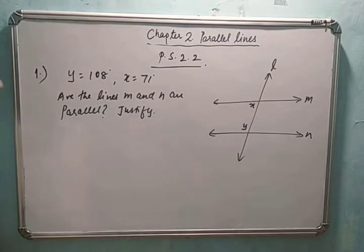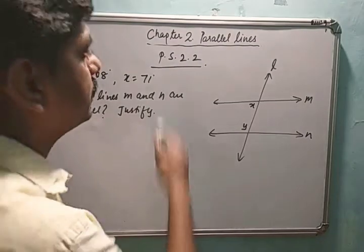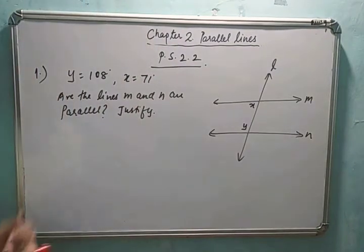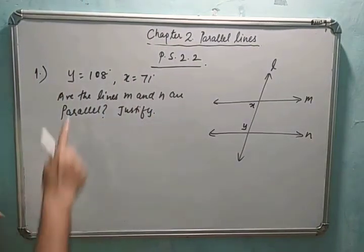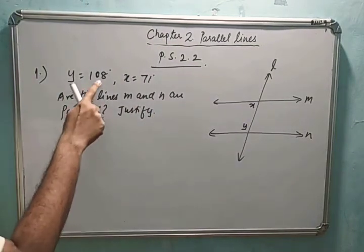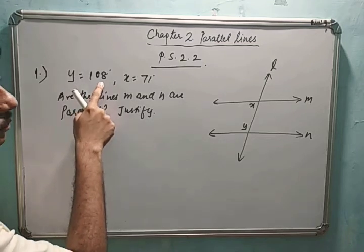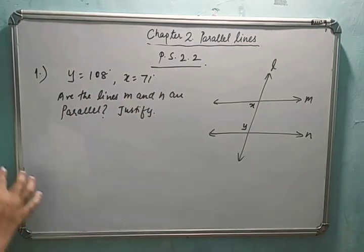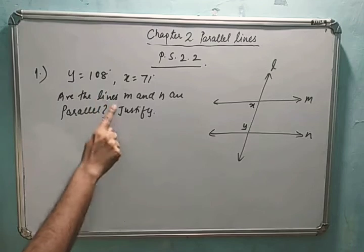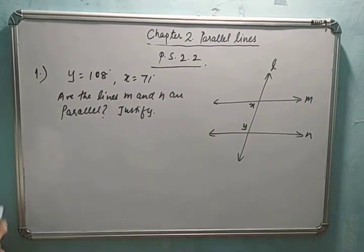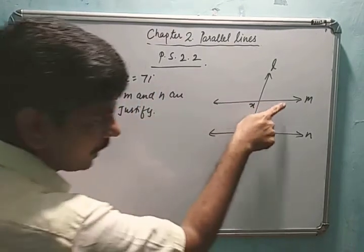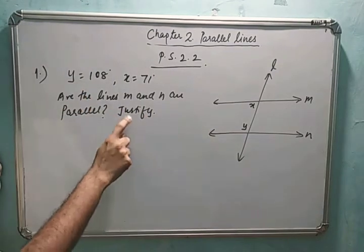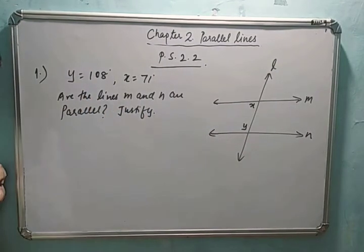Students, we are going to start with practice set 2.2. See the first problem: in the figure, y is 108 degrees and x is 71 degrees. The question is: are lines m and n parallel? We have to check whether these two lines are parallel and justify — that means we have to give a reason for it.